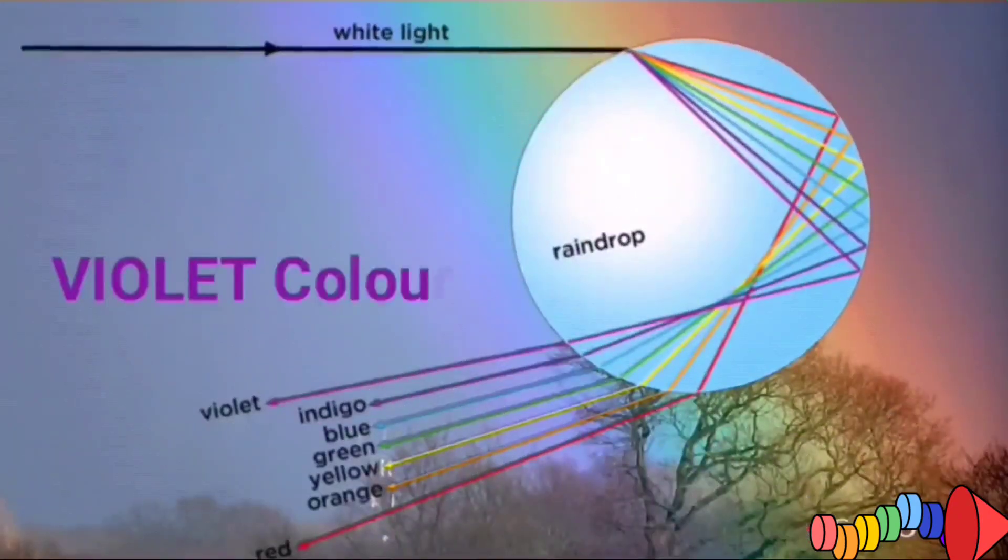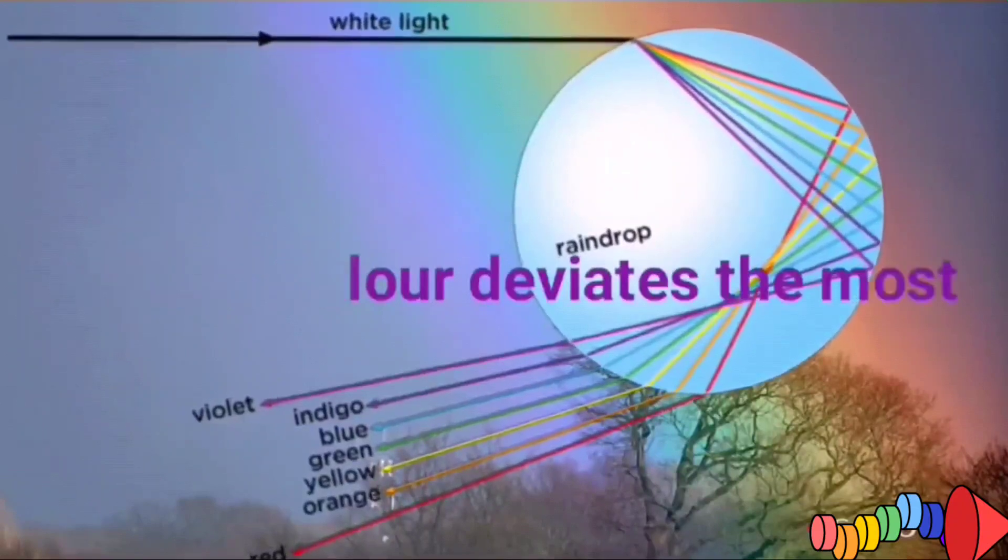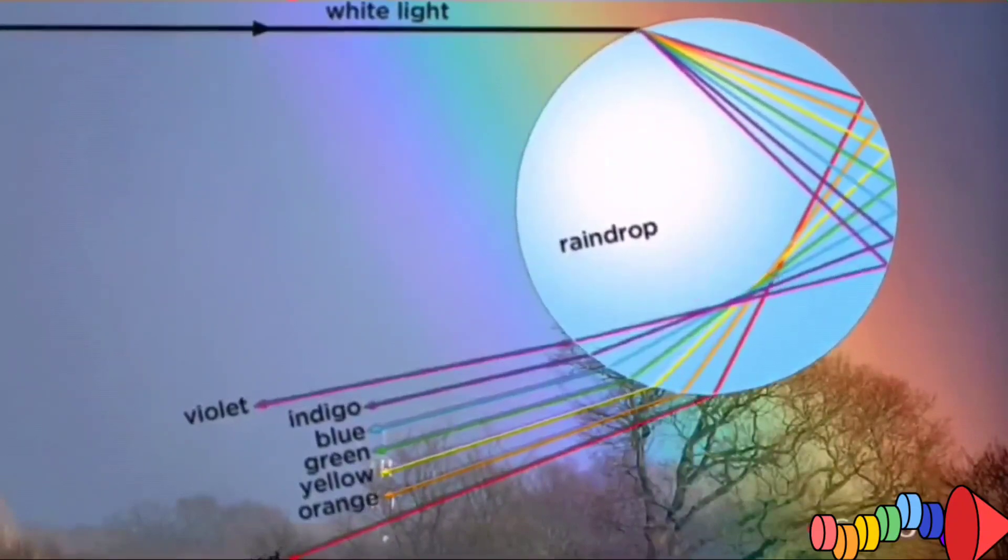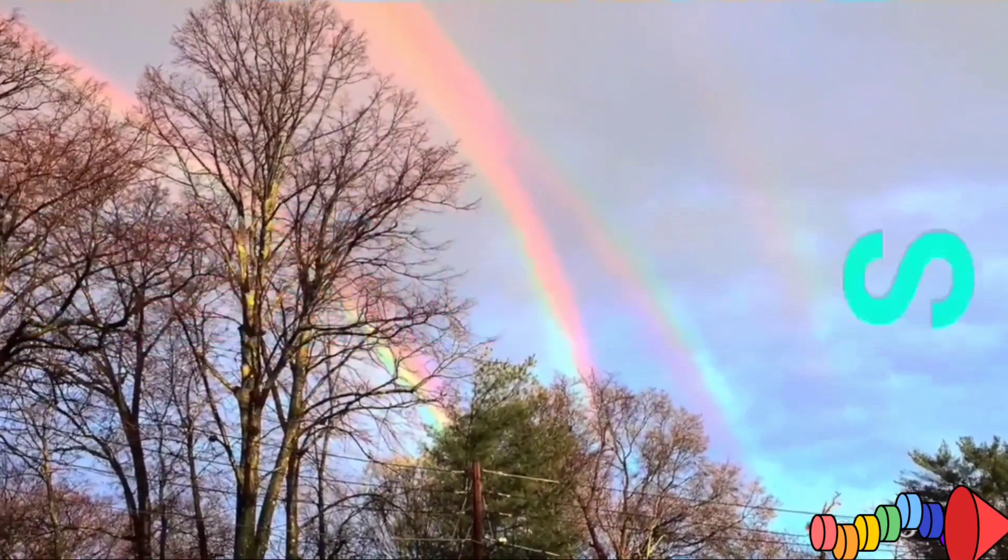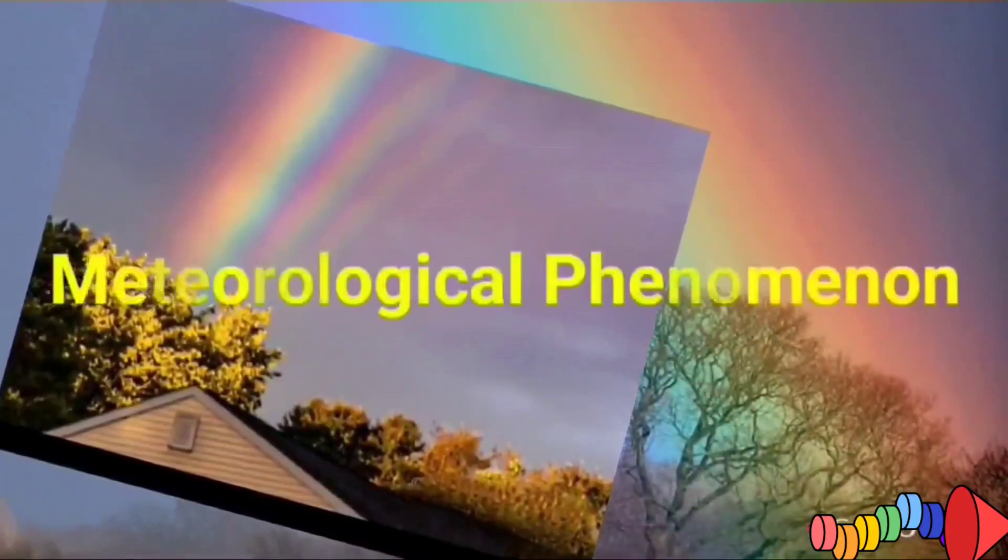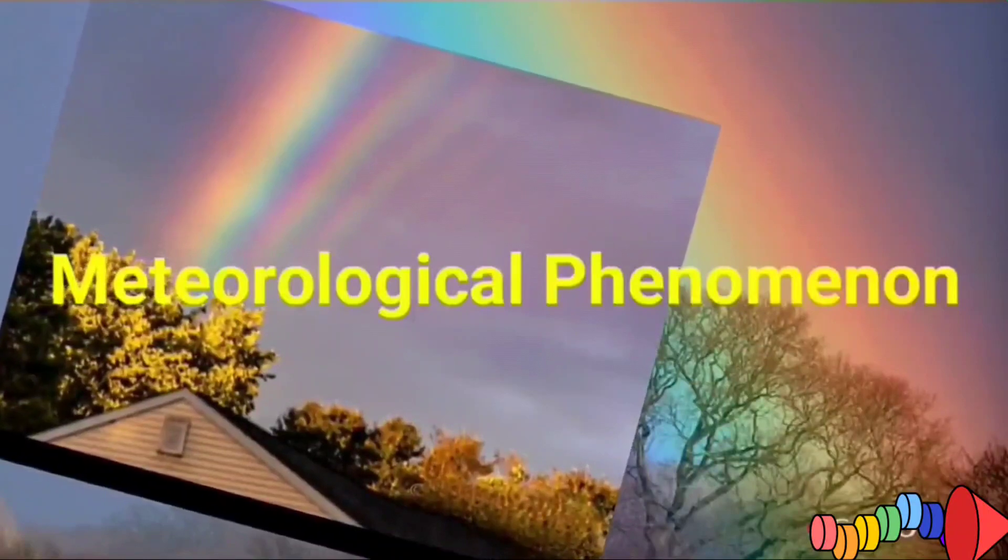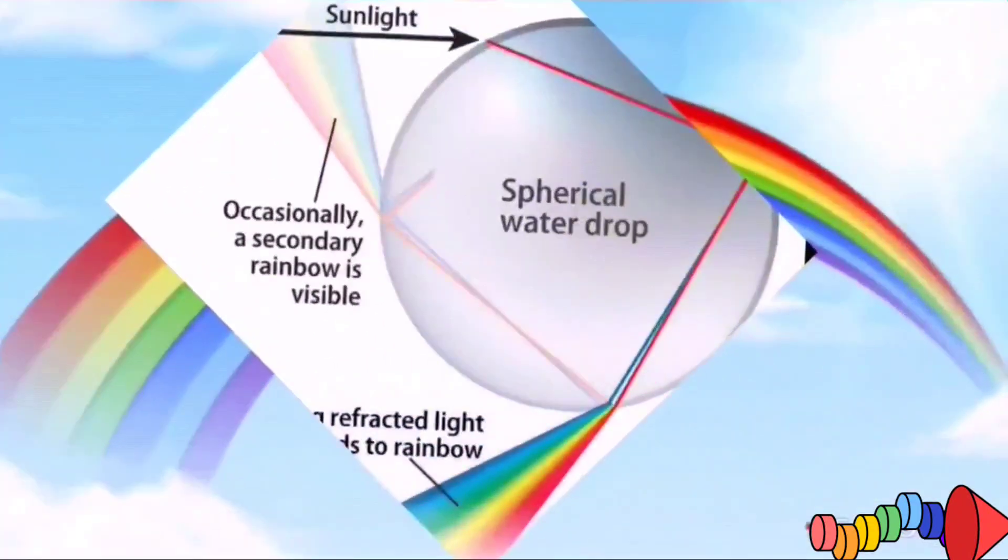A rainbow is a meteorological phenomenon that results in a spectrum of white light appearing in the sky as a result of reflection, refraction and dispersion of light in water droplets. You will notice that refraction of sunlight takes place at two places and reflection of the light from the back of the droplet.